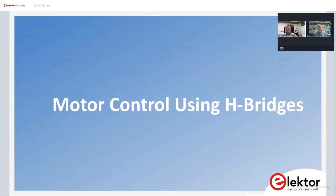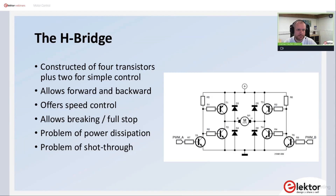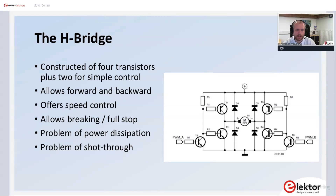When doing motor control for DC motors and stepper motors, we will deal many times with H-bridges. Let's have a look at what an H-bridge is and why it's good to understand how it's used. An H-bridge for driving a motor is used not just to turn your motor on and off, but as you can see it's constructed of four transistors — and in this case two additional transistors — to drive the motor forward and backward. The polarity at M1 can be switched.